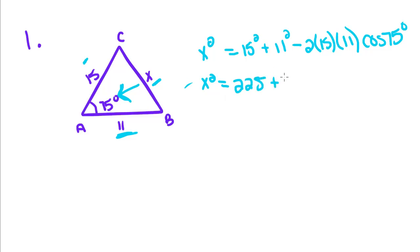So 15 squared is 225 plus 11 squared is 121 minus 2 times 15 times 11 is 165, and we're not going to plug in cosine yet. Okay, so 225 plus 121 is 346 minus 2 times 165, 330 cosine of 75.